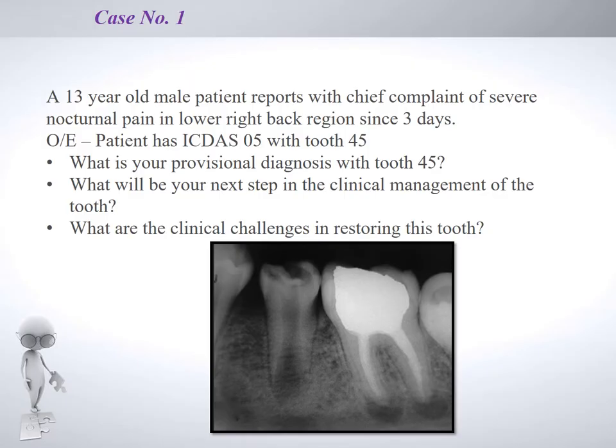Consider this case: a 13-year-old male child reports with a chief complaint of severe nocturnal pain in the lower right back region for three days. On examination you find an ICDAS 03 deep caries lesion with tooth 45. What would be your provisional diagnosis for tooth 45, your next clinical step, and what clinical challenges would you face restoring this tooth? This tooth has a provisional diagnosis of irreversible pulpitis.